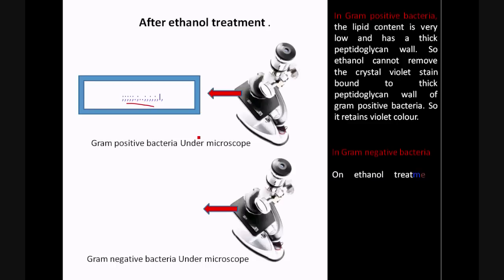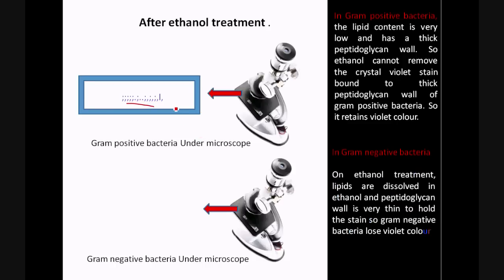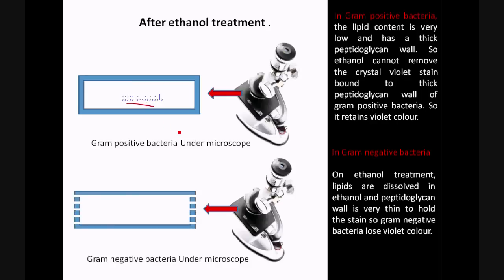But in the case of Gram negative bacteria, the lipid content is very high. So upon ethanol treatment, the lipids are dissolved in ethanol, and therefore the peptidoglycan wall is not able to retain the crystal violet stain. So Gram negative bacteria lose the violet color, and at this stage we cannot see these Gram negative bacteria under the microscope.